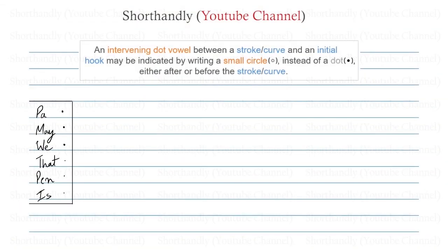So we are having a statement here. Let's read this statement. It says: an intervening dot vowel between a stroke or a curve and an initial hook may be indicated by writing a small circle instead of a dot, either after or before the stroke or a curve.